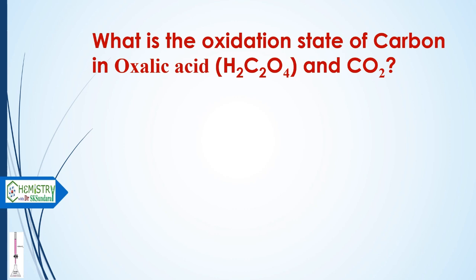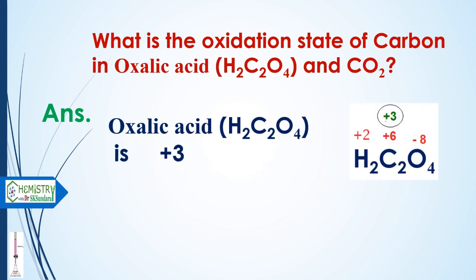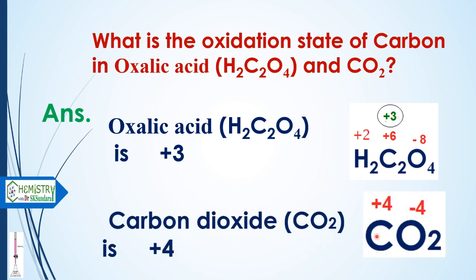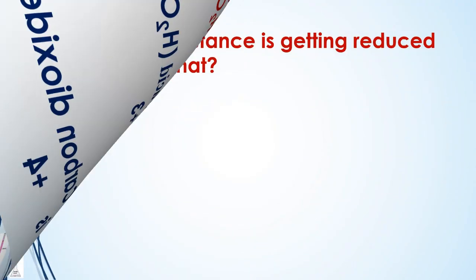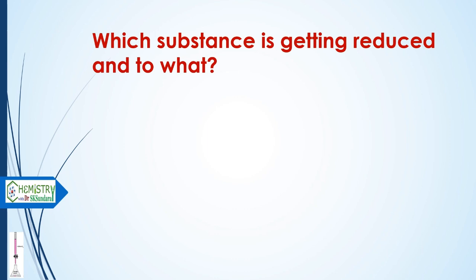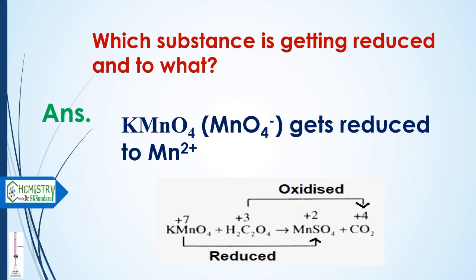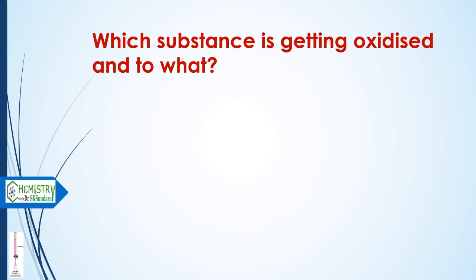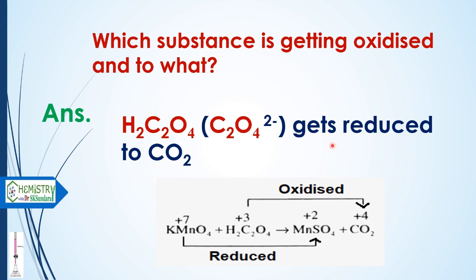The next question is: what is the oxidation state of carbon in oxalic acid and carbon dioxide? In oxalic acid, oxygen is −2 (four oxygens = −8) and two hydrogens give +2, so for two carbon atoms it is +6, meaning each carbon is +3. In carbon dioxide, the oxidation state of carbon is +4. Permanganate ion gets reduced to Mn²⁺, and oxalic acid is oxidized from +3 to +4.